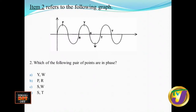Number two refers to the following graph. It shows a sinusoidal graph of a transverse wave and asks: which of the following two pairs of points are in phase? When you're dealing with a wave that is in phase, it basically speaks about two points along the wave that are doing the same thing at the same time. With a transverse wave, the particles oscillate up and down. So if you're in phase, it means that any two particles — whether consecutive or any two along the wave — should be doing the same thing at the same time. If one point is going up, then the point in phase should also be going up.